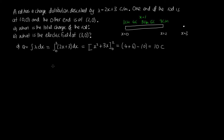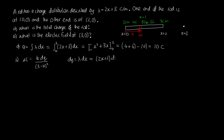For Part B, we work out the electric field at x equals three in the normal way. We consider a small increment of the rod with length dx at position x from one end. The electric field due to that increment is dE equal to k dq divided by (3 minus x) squared. Since dq equals lambda dx and lambda is 2x plus 3, we have dq equal to (2x plus 3) dx, which varies with x.